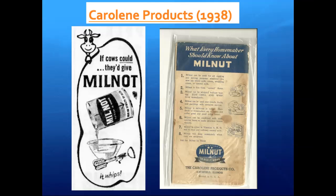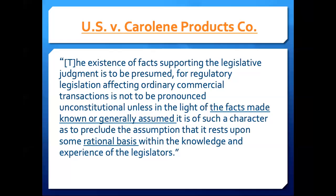The court tells us that if Congress is going to regulate the economy, they need only find that the law serves some kind of rational basis. They don't need any compelling or necessary type of purpose. Unlike with Lochner, the government doesn't have to provide proof as to a specific social need — just a rational belief. In fact, the court said that the existence of facts supporting their judgment is to be presumed, at least in cases involving ordinary commercial transactions. The court has now become highly deferential to the legislature.